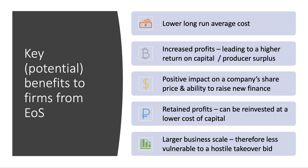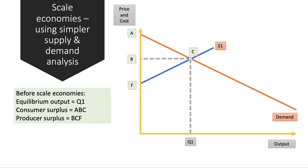Businesses that are scaled are perhaps less vulnerable to a hostile takeover bid, so there's a greater sense of security. Here are two diagram approaches. One is to use a simpler supply and demand analysis. Here's a market diagram showing the initial equilibrium output of Q1 and price B, where consumer surplus before economies of scale is the area ABC and producer surplus is BCF, and together you get economic welfare.